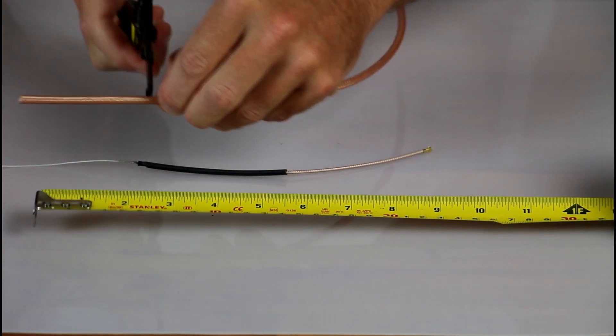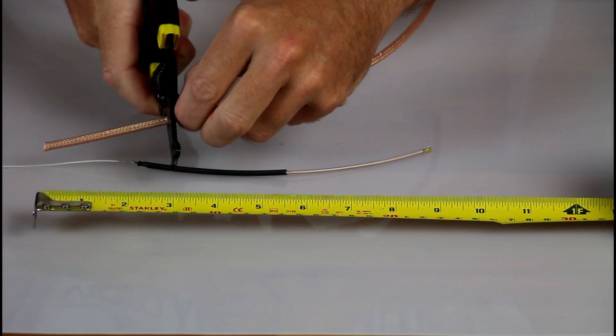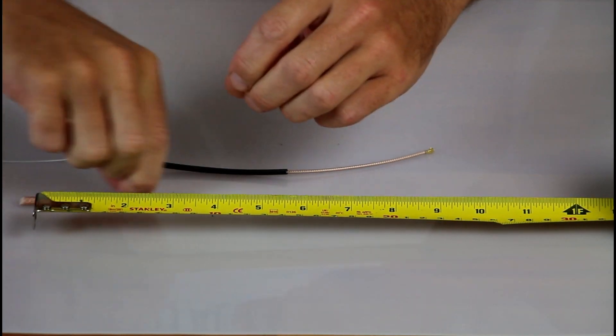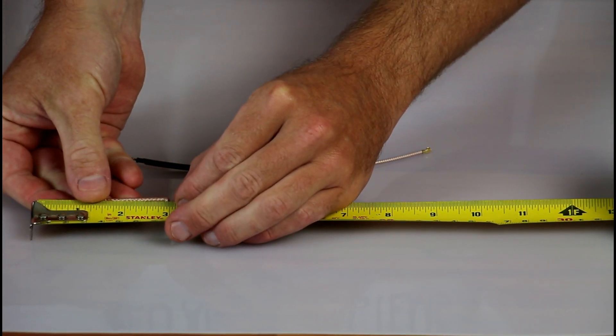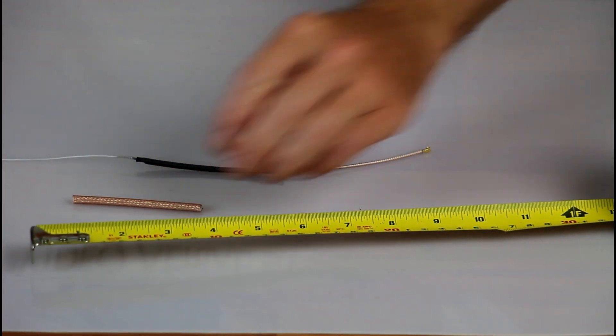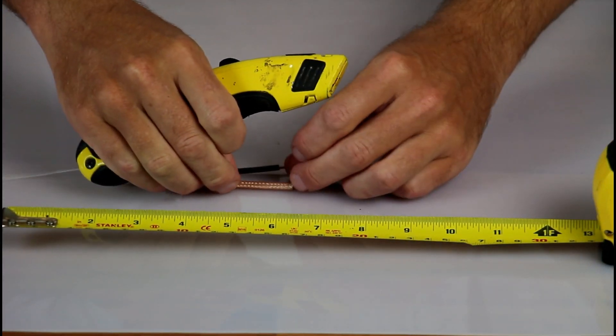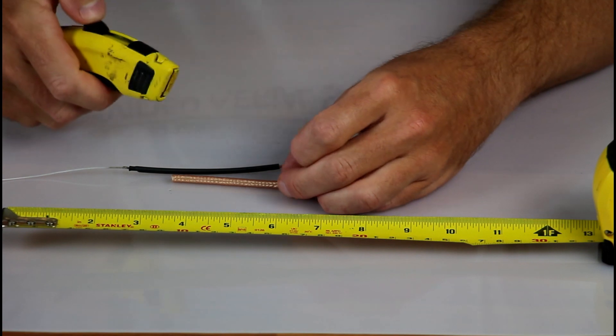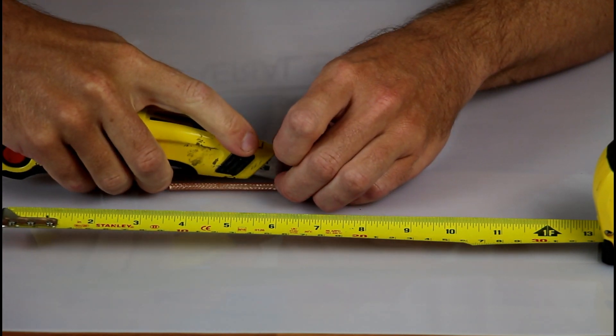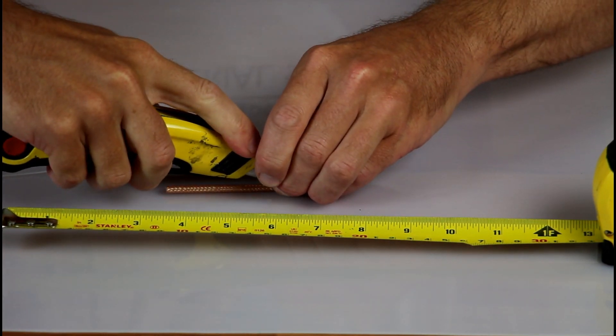Now we'll need to cut our RG 142 to length. I'm cutting mine at 2 and 7/8 inches for 915 megahertz. Now for you 868 megahertz guys about three and an eighth to three and a quarter inches is about right and that accounts for something around 82 to 84 millimeters long.